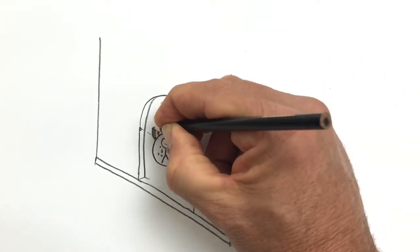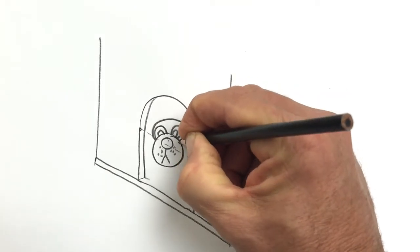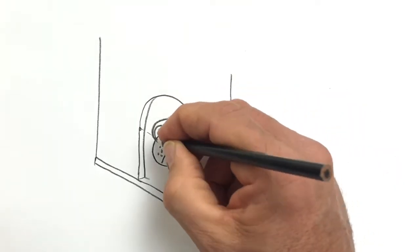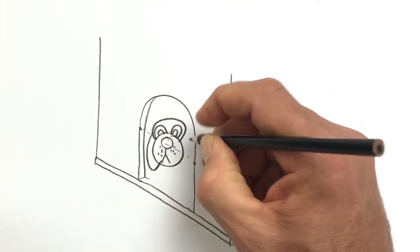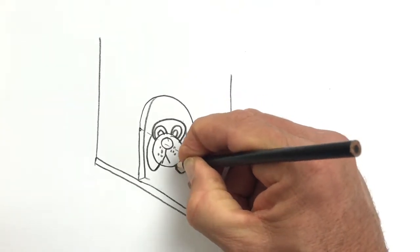For the head, draw a line that goes right around those. Now some ears. I'm going to make them look like eye strips. One, two.